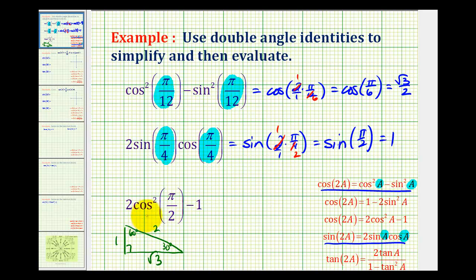In our last example, we have two cosine squared pi over two minus one, which fits the form of this identity here, where A is equal to pi over two. And so this right side is equal to cosine of two times A.